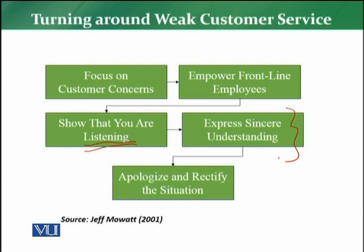When you focus on all five steps and follow and practice them, they will become routine — and that is the only way to truly turn around weak customer service. To summarize, the five major steps are: focusing on customer concerns, empowering frontline employees, showing that you are listening, expressing sincere understanding, and then apologizing and rectifying the problem by taking corrective actions. That is the solution to turning around weak customer services.